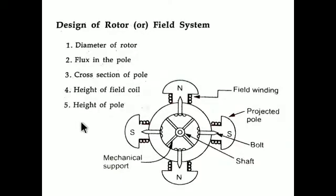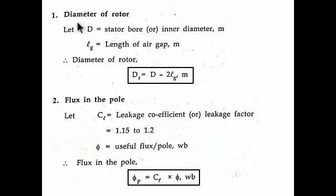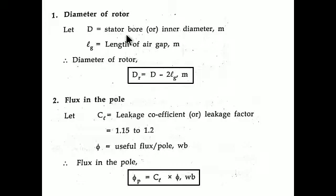The first design step is the diameter of the rotor. There is a direct equation to find it: you subtract two times the air gap length (lg) from the stator bore diameter (D). So Dr = D - 2·lg, where D is the stator bore or inner diameter and lg is the length of the air gap. The factor of two accounts for both sides of the air gap.